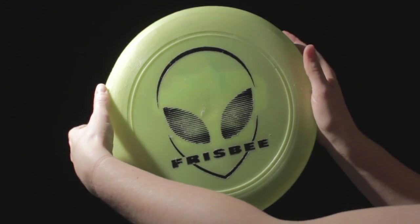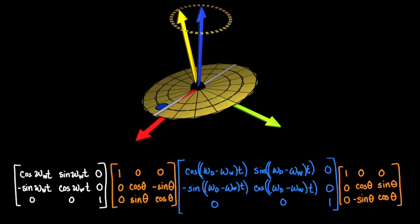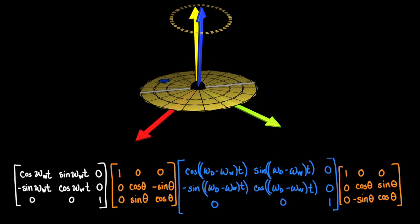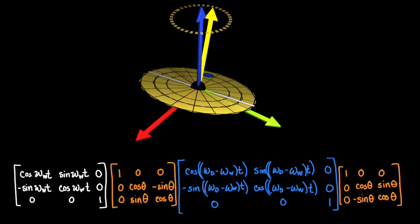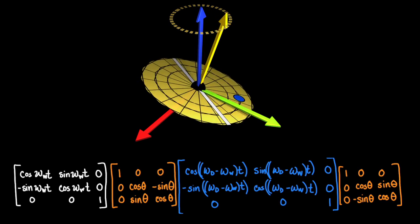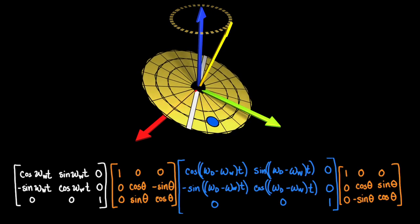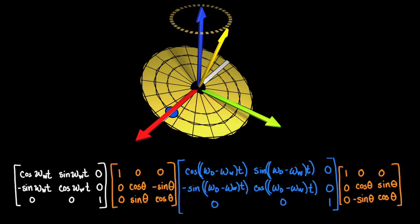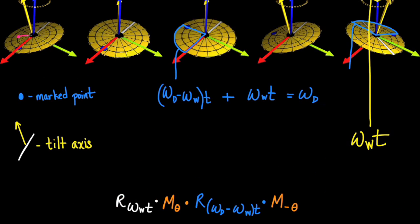Because the disk is a rigid object, by describing the position of the marked point and the tilt axis for all times with matrices, we've actually described the position of every point on the disk. We can find the location of any point at time t by applying this matrix operation to any vector on the initial disk.